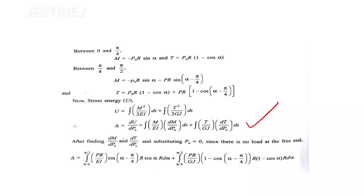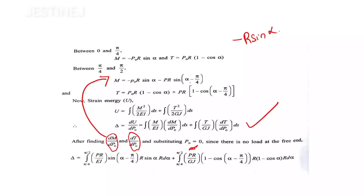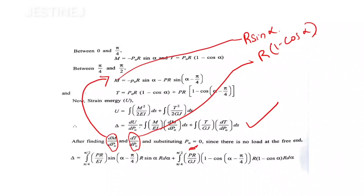We now find dM/dP₀ and dT/dP₀, then set P₀ = 0 since it is only a dummy load with no real value. For the region 0 to π/4: dM/dP₀ = -R sinα, and dT/dP₀ = 0. For the region π/4 to π/2: dM/dP₀ = -R sinα, and dT/dP₀ = R(1 - cosα).